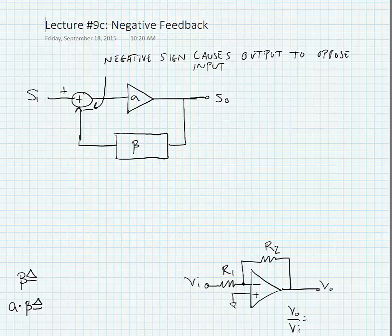So first, we have this generalized setup for what negative feedback looks like in the system. We have some input S_i that goes into a summation block.